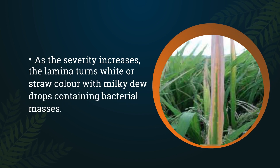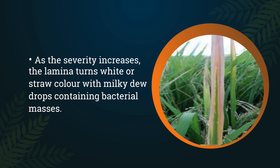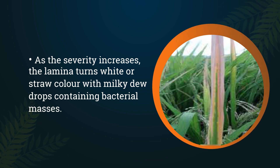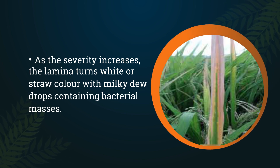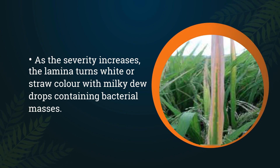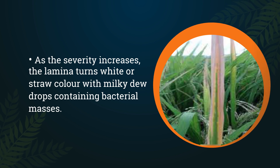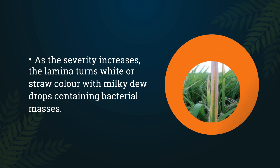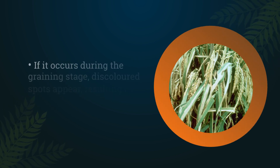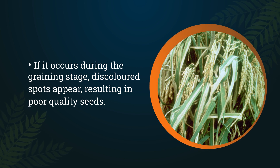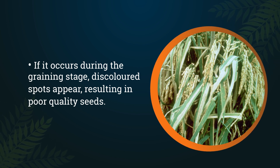As the severity increases, the lamina turns white or straw colour with milky dewdrops containing bacterial masses. If it occurs during the graining stage, discoloured spots appear, resulting in poor quality seeds.